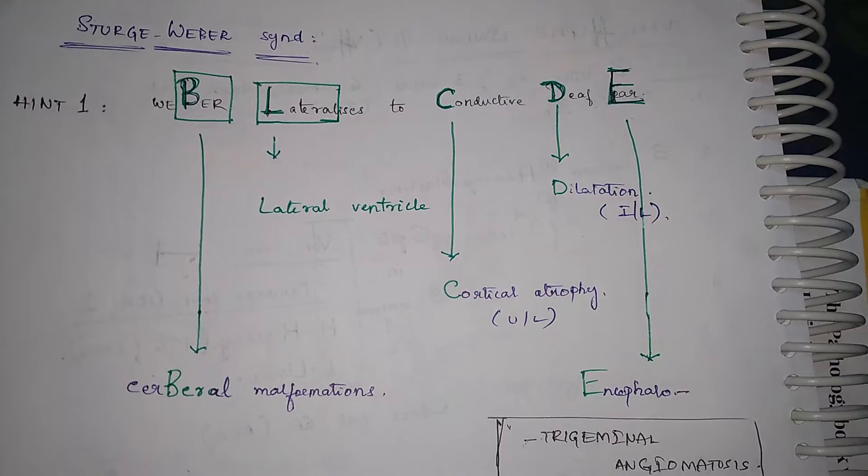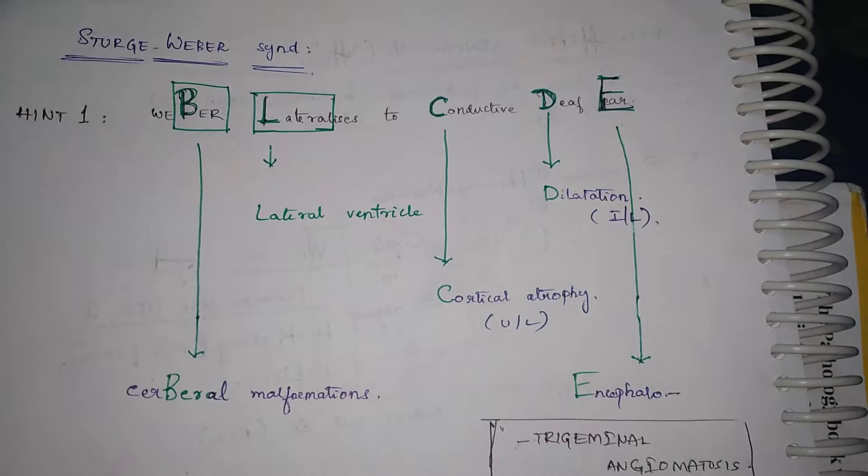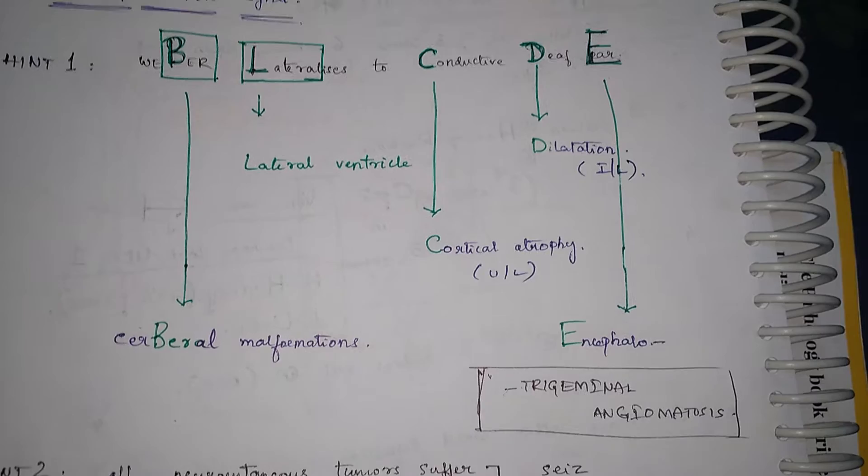Conduct to C for cortical atrophy that is unilateral deaf dilation ipsilateral ear stands for encephalotrigeminal angiomatosis.